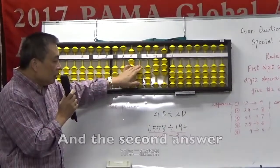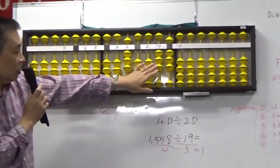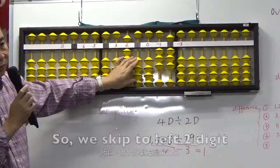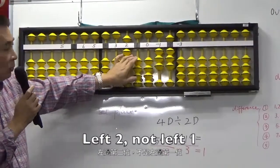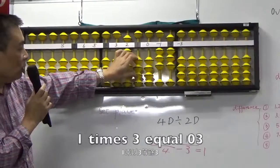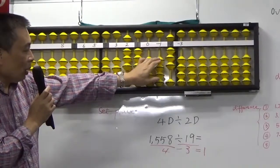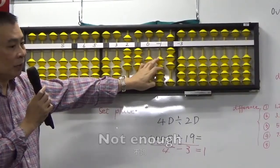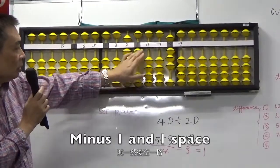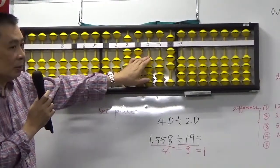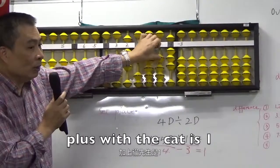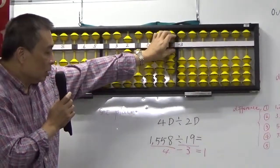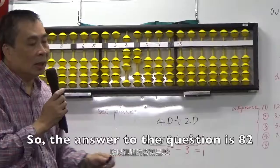The second answer: three is bigger than one, because the first is enough. So we skip to left two — very important, left two, not left one: 1, 3, 0, 3. Three times nine — not nine times three — three times nine, not enough. Minus one. One space plus: two times nine is eighteen. So the answer to this question is eighty-two.